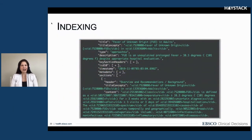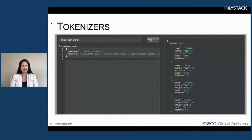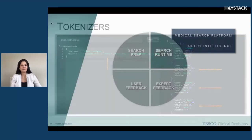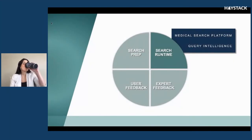This is an example of what our index looks like after semantic enrichment has run — you can see a mixture of keywords as well as concept IDs. When we tokenize this text, we strip out the CID tags, and what we're left with are the raw concept IDs as well as the original text. That summarizes our search prep environment.